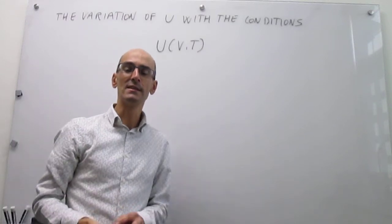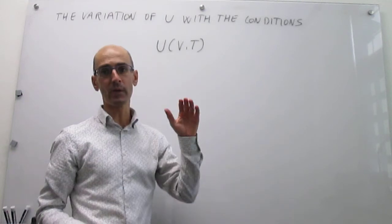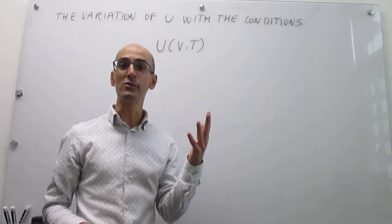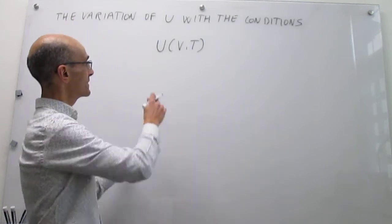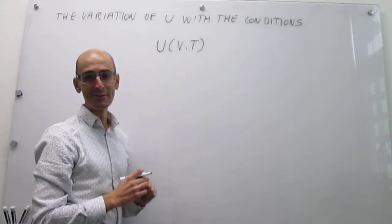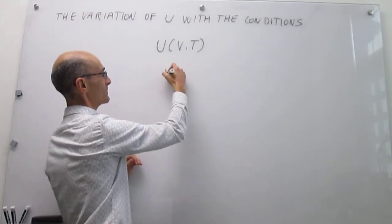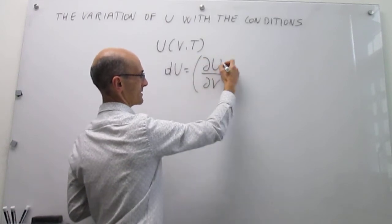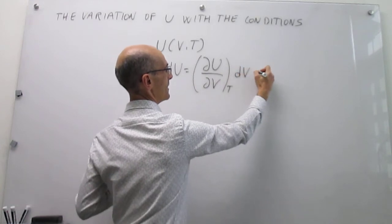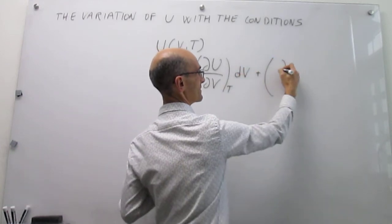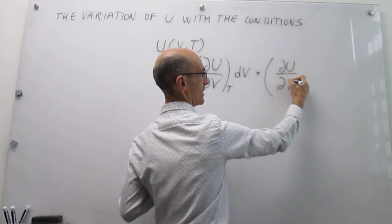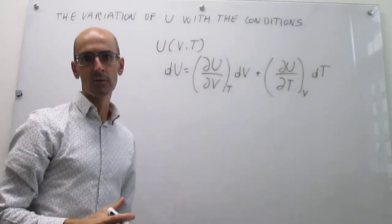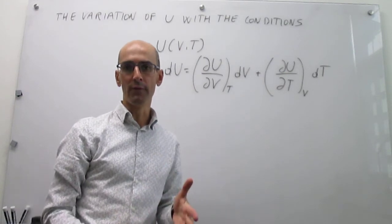To study the sensitivity of a function on variables, you have to take first derivatives, because the first derivative contains how that function depends on a particular variable. For this particular function — the internal energy depending on temperature and volume — the total derivatives are as follows: you have the first derivative of the internal energy with respect to volume at constant temperature, times dV, plus the first derivative with respect to temperature at constant volume, times dT. That's the function that tells you the sensitivity of the internal energy on volume and temperature.